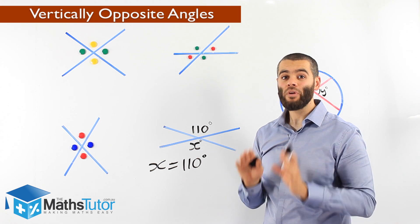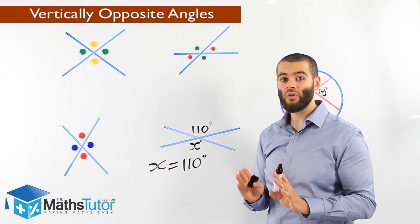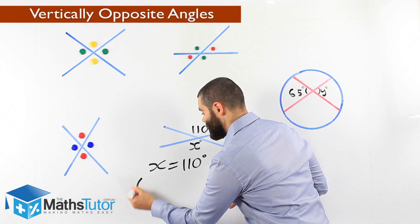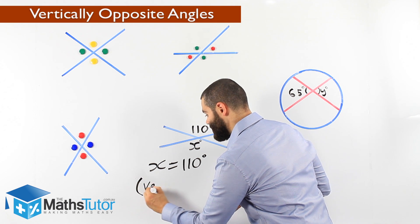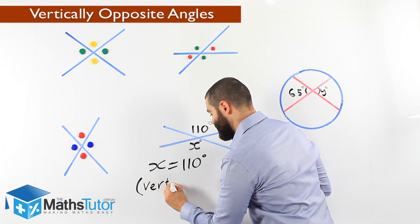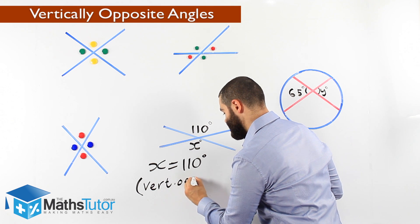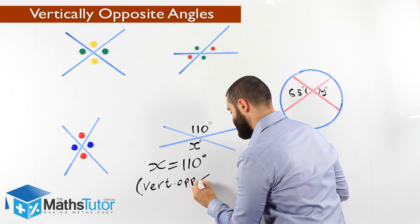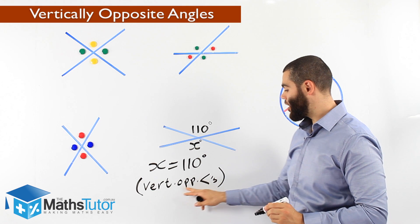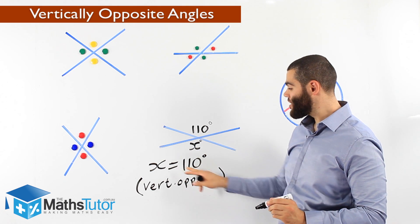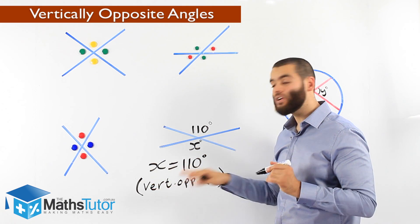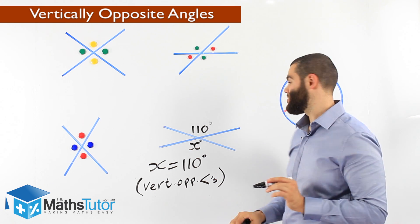But we must give a reason. We have to give our reason, and our reason is: vertically opposite angles. X is 110 degrees — why? Because they are vertically opposite angles.